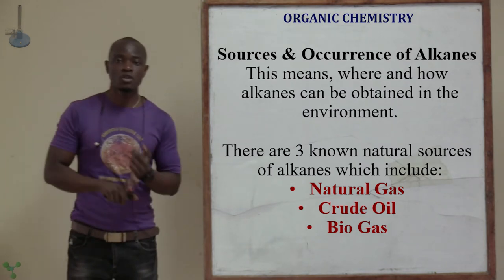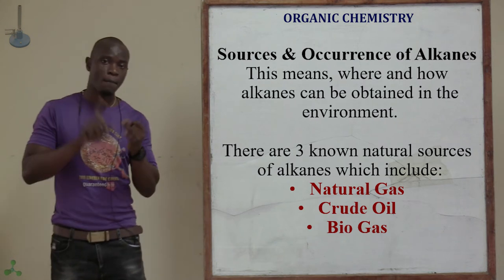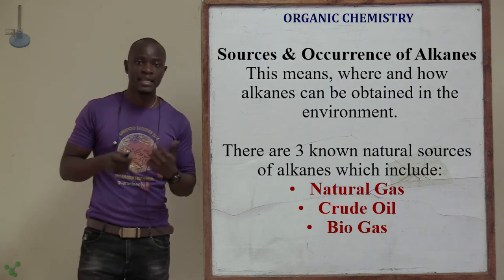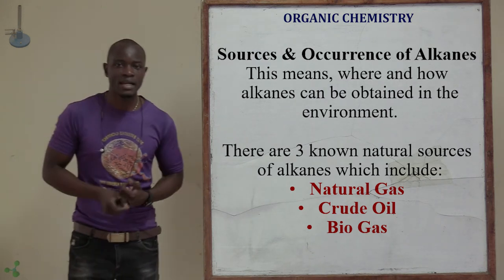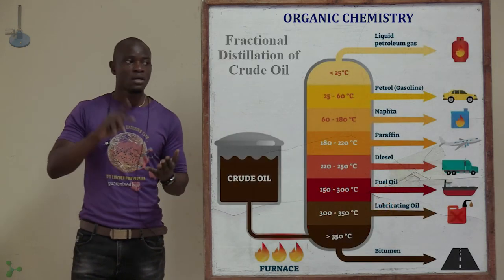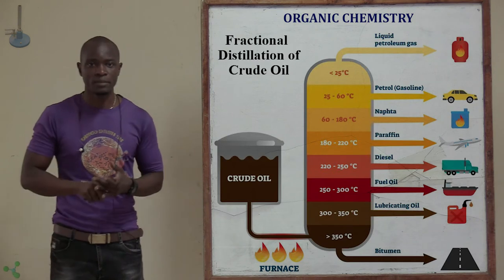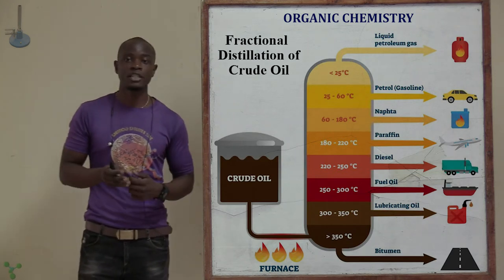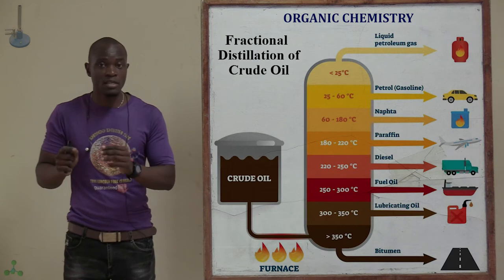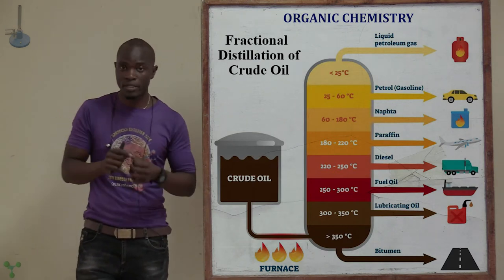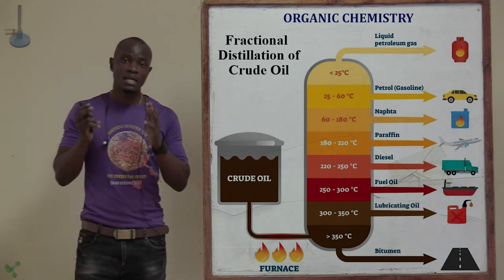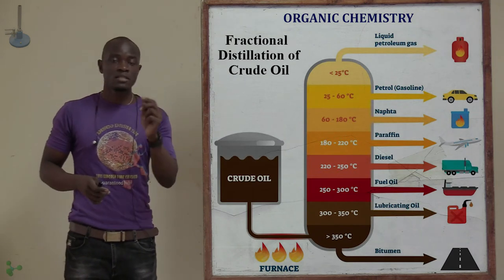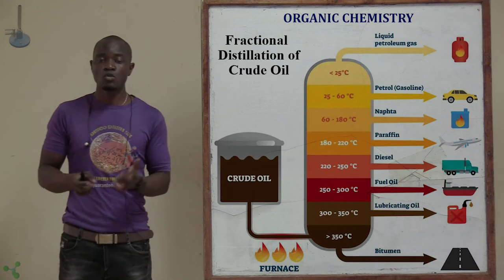Apart from biogas, we also have crude oil as a source. Crude oil is a major source of alkanes and mainly consists of a mixture of many alkane family members — methane, ethane, propane, butane. It can be separated into different components using fractional distillation, which separates different mixtures that have very close boiling points. Since the components have different boiling points, it makes it possible to separate them.